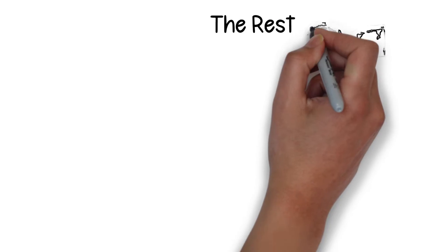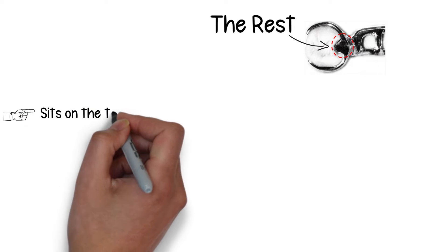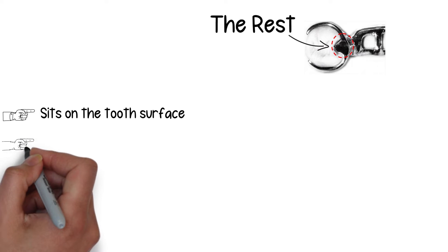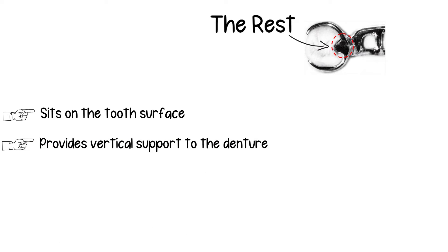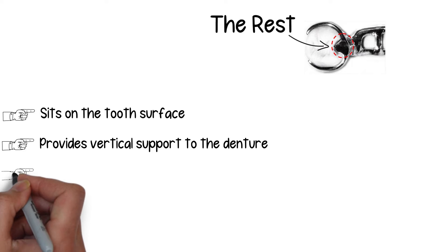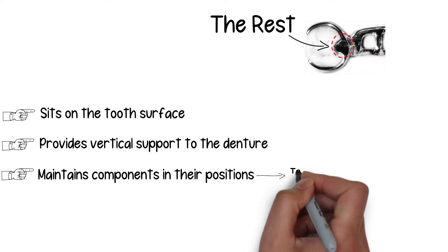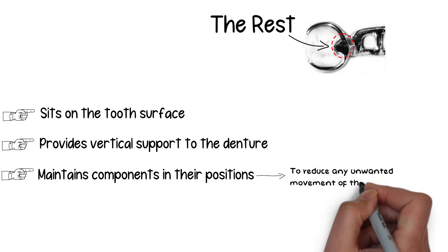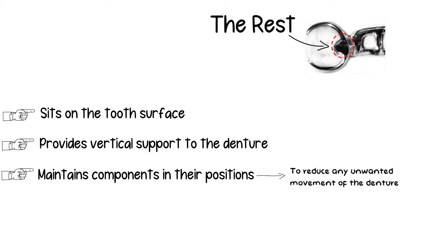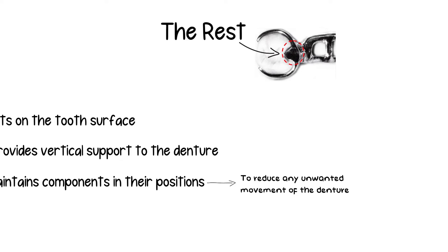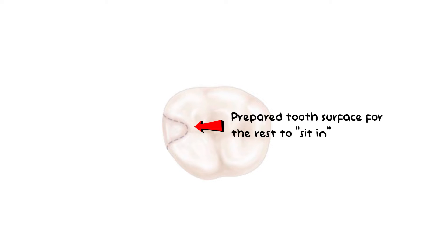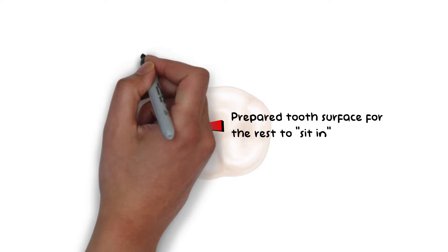The third part is the rest. The rest is a part of the prosthesis that is placed on the tooth surface and is responsible for providing vertical support to the denture. By providing this vertical support, the rest maintains the components of the prosthesis in their proper position so that there is no unwanted movement of the denture, which could otherwise lead to impingement of soft tissues and other denture-related issues. The rest cannot directly sit on the tooth surface, so some minor tooth preparation is required. The prepared tooth surface on which the rest will sit is known as the rest seat.